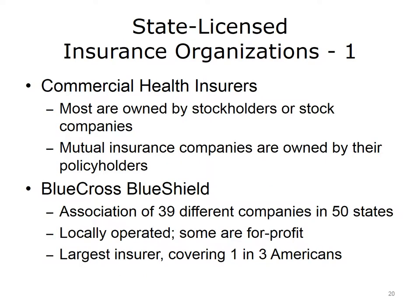There are three types of state-licensed insurance organizations. Commercial health insurers, also known as privately funded health plans or simply insurance carriers, are most often owned by stockholders or stock companies — Aetna Insurance Company is one such example. Alternatively, these companies can be mutual insurance companies, which are owned by their policyholders. Blue Cross Blue Shield is a nationwide association of 39 independently operated companies. Originally, Blue Cross Blue Shield companies were not-for-profit organizations, but today some of them operate on a for-profit basis. Together, these companies are the nation's largest insurer, providing coverage for one in three Americans.